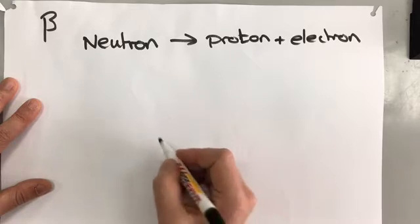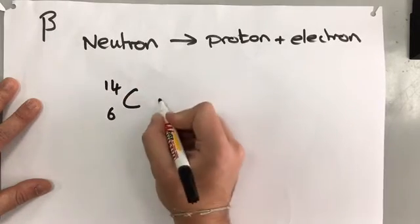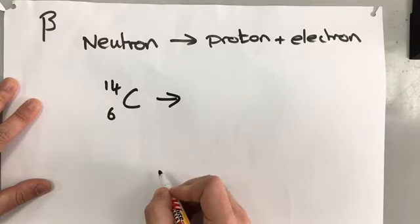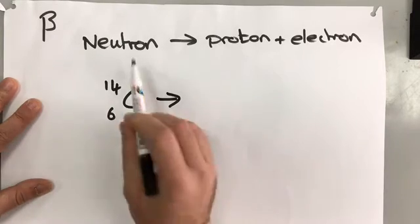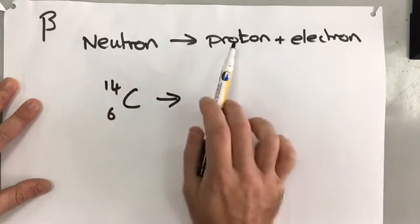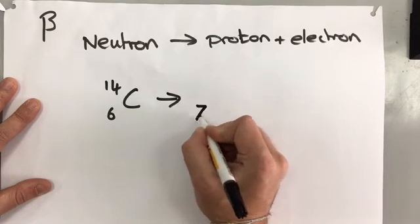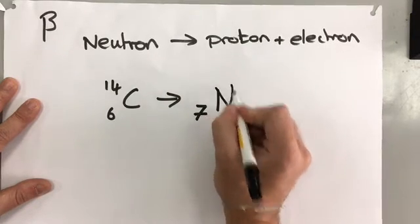For example, you could have carbon-14, and that would change, because you're creating a proton from a neutron. The proton number is going to increase, which is going to change the element.